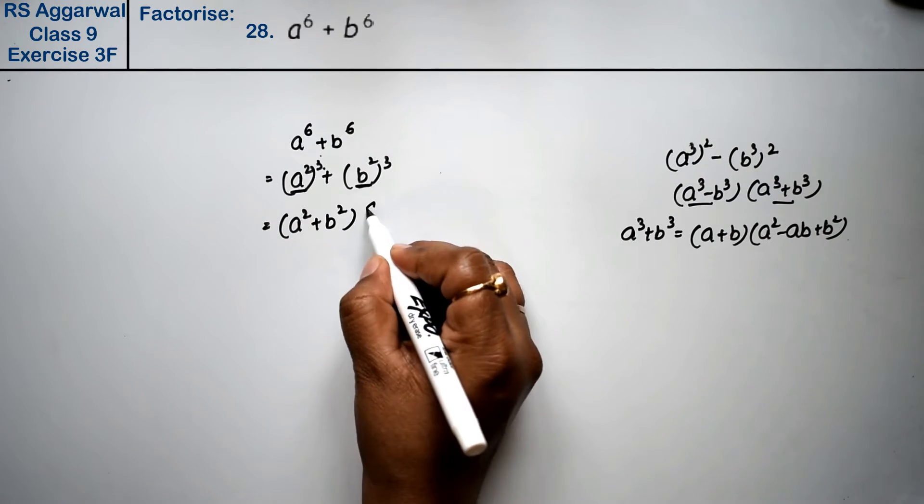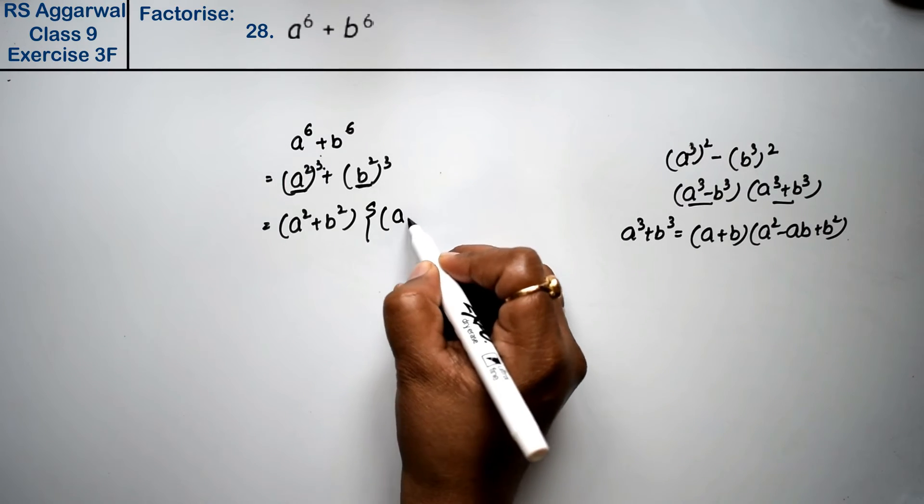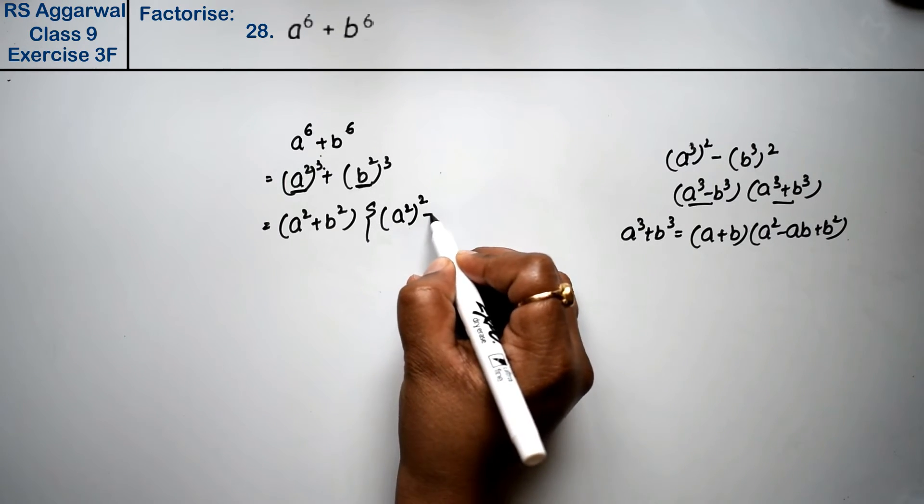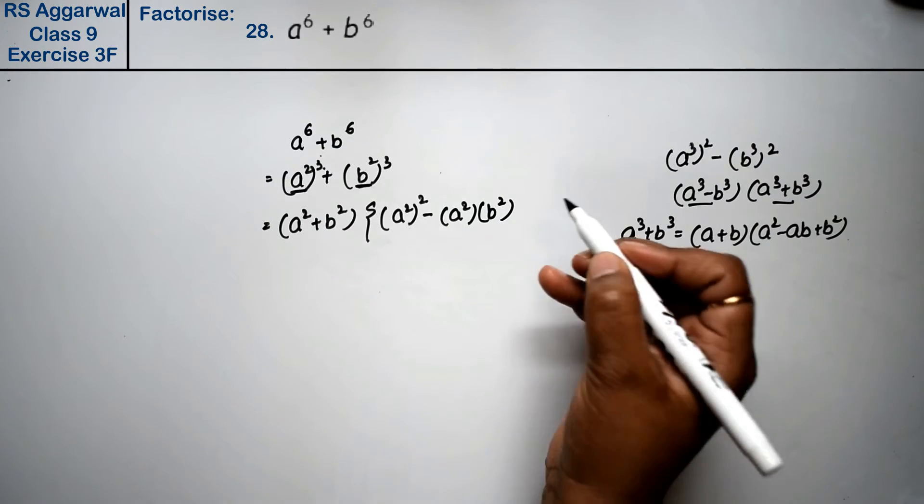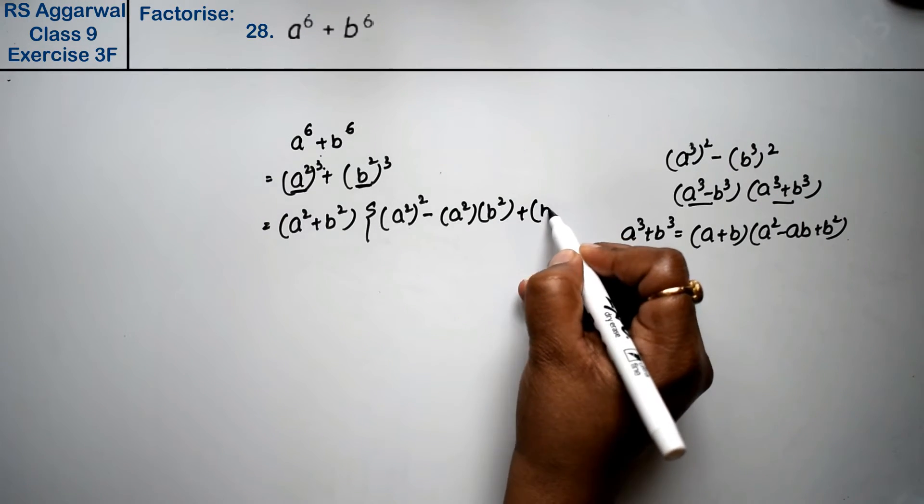Next, substituting we get: (a^2 plus b^2)(a^4 minus a^2b^2 plus b^4).